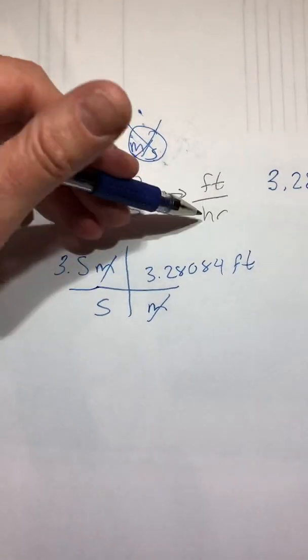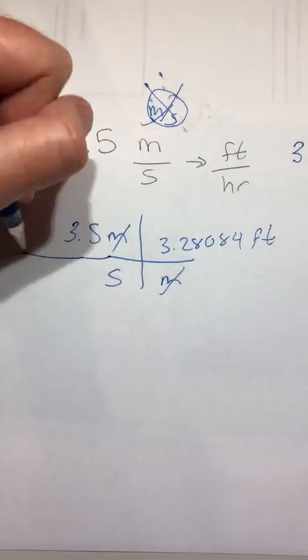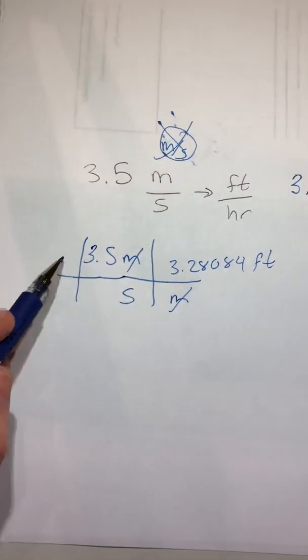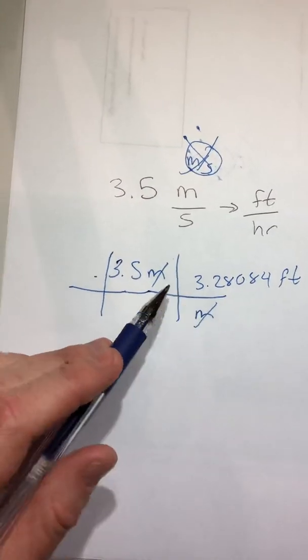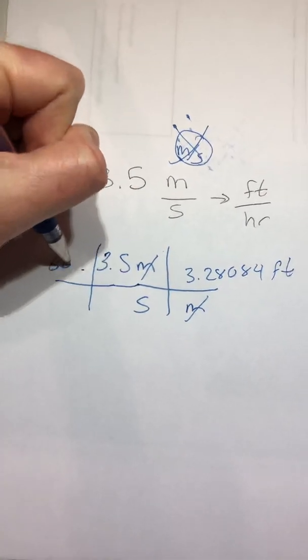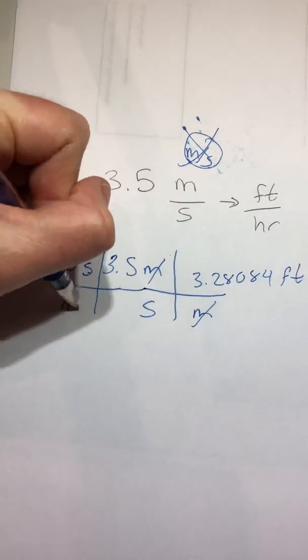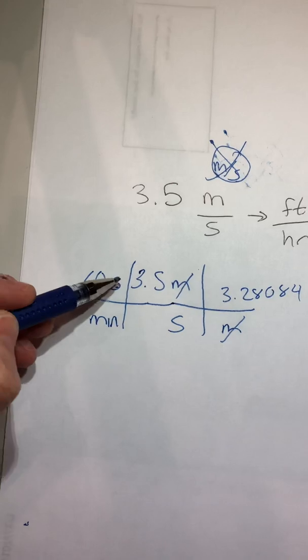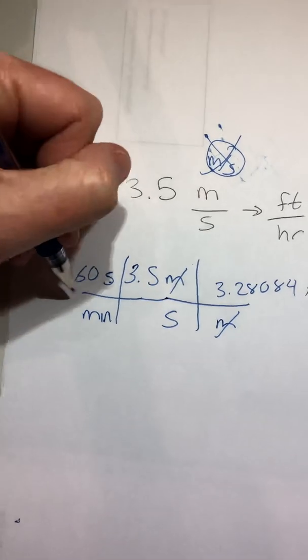But we want to change the seconds into hours. So in order to do that, we're going to use conversions that we know. We're going to put the seconds up here because meters and meters cancel on the diagonal. So we'll have 60 seconds per minute. How did I know that the 60 went here? Because there are 60 seconds in a minute, not 60 minutes in a second.